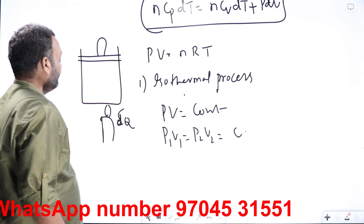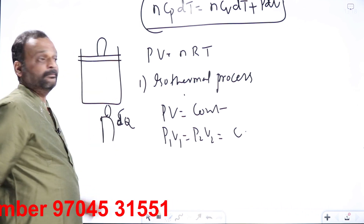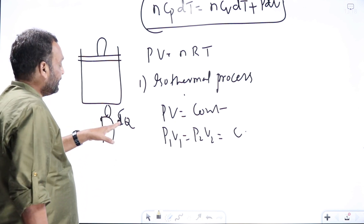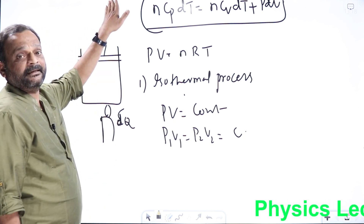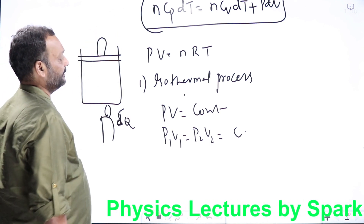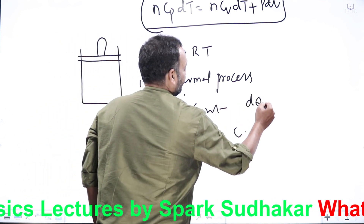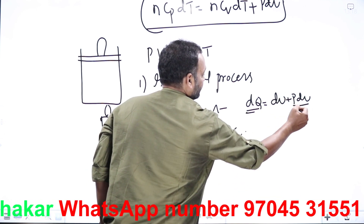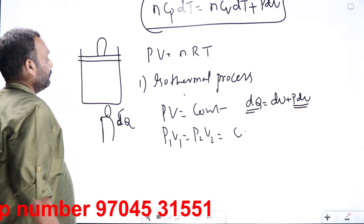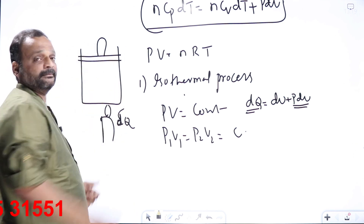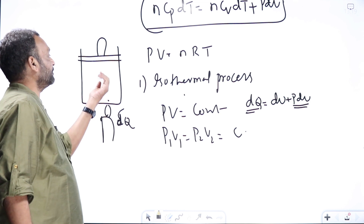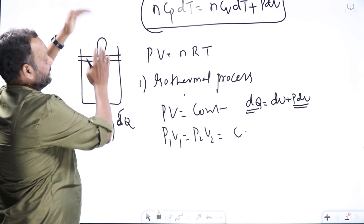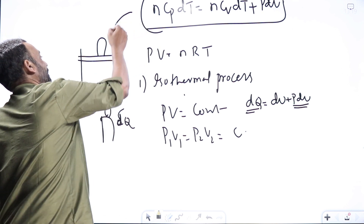In an isothermal process, you give delta Q heat but temperature must not increase. Therefore all the heat must be used in doing external work only; dU equals zero, so delta Q equals delta W. When you heat the gas it pushes the piston up; when you compress it, all work done is rejected as heat to the surroundings.